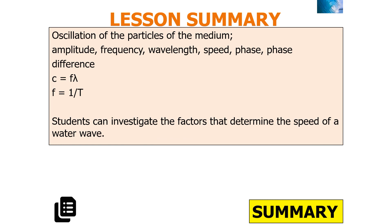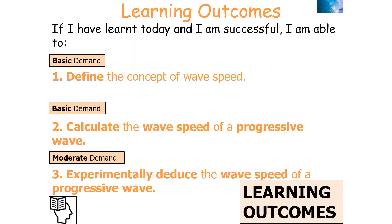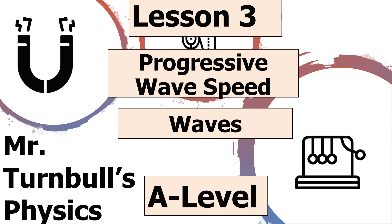To summarise, we've looked at the oscillations of particles of the medium as a wave, and understood amplitude, frequency, wavelength, speed, phase, and phase difference, and how to investigate the factors that determine wave speed. If you've been successful in today's lesson, you should be able to define wave speed, calculate the wave speed of a progressive wave, and experimentally deduce the wave speed of a progressive wave. Thank you very much for watching this lesson on progressive wave speed, part of the waves topic in AQA A-level physics. Have a lovely day.